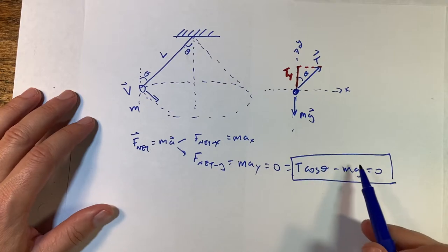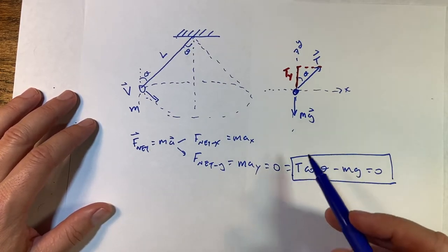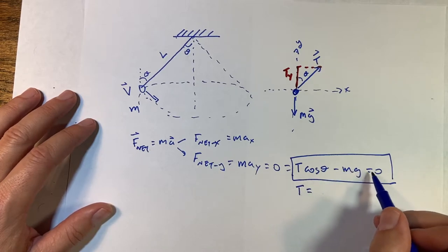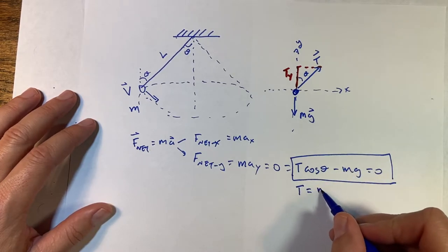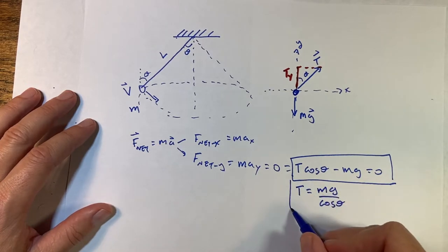So in this expression, I would imagine I could know m and theta, so I don't know the tension. So I could actually solve this for the tension. And I get, if I add mg to both sides and divide by cosine theta, I get mg over cosine theta.